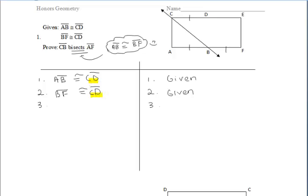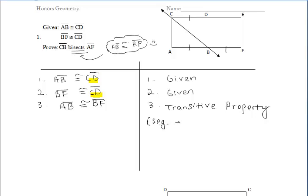AB and BF are both congruent to the exact same segment CD, so that must mean that those two segments, AB and BF, must be congruent to each other. We can say that that's true by the transitive property — because if two segments are congruent to the same segment, then they are congruent to each other.